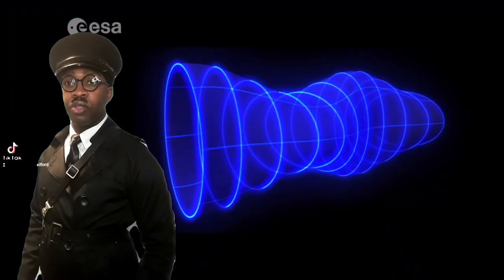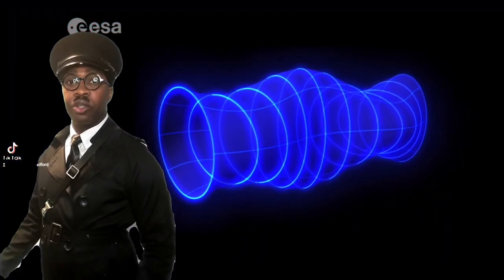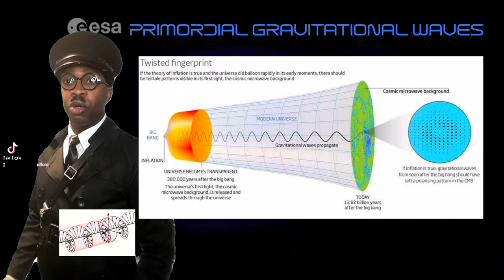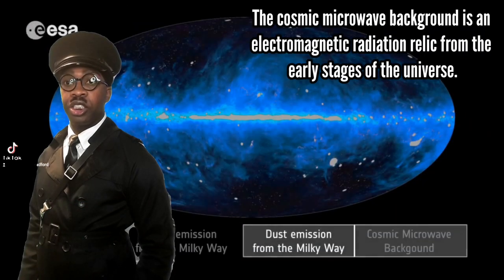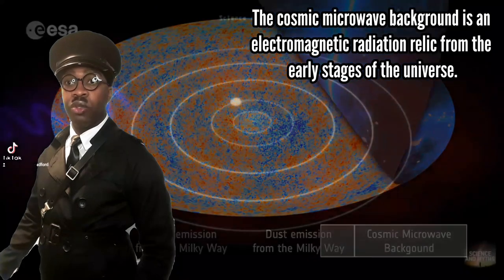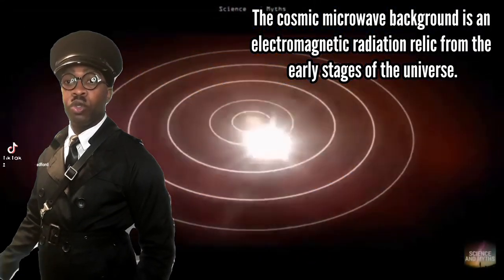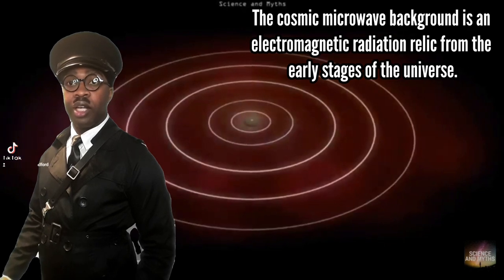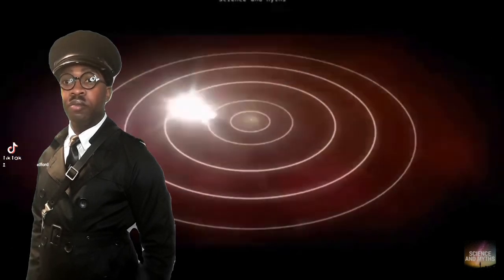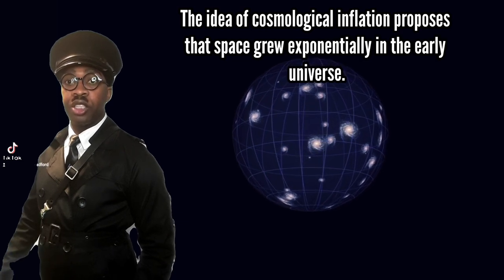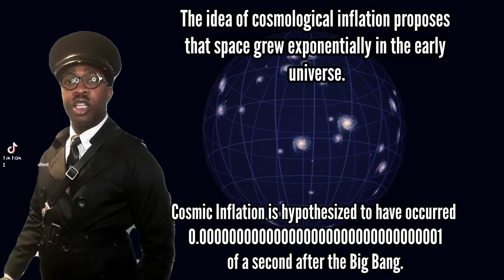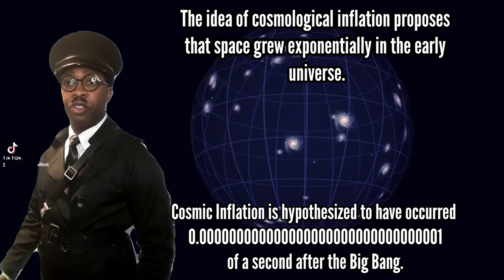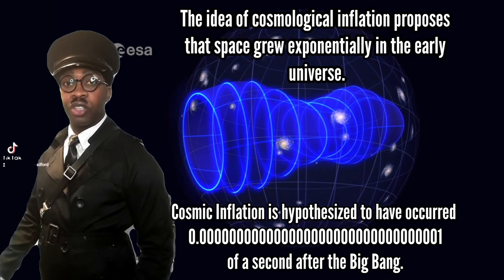Primordial gravitational waves are gravitational waves that originated in the early cosmos, as evidenced by the polarization of the cosmic microwave background — the electromagnetic radiation left over from when electrons and atomic nuclei first became bound to form neutral atoms around 380,000 years after the Big Bang. Models of cosmic inflation, a theory of exponential expansion of space occurring from 10 to the negative 33 to 10 to the negative 32 of a second after the Big Bang, predict such gravitational waves.